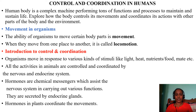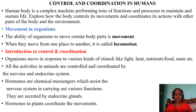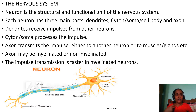Introduction to control and coordination: organisms move in response to various kinds of stimuli like light, heat, nutrients, food, etc. All activities in animals are controlled and coordinated by two systems: the nervous system and the endocrine system. Hormones are chemical substances that act as chemical messengers, assisting the nervous system in carrying out various functions. Hormones are secreted by endocrine glands. In plants, hormones coordinate movements.